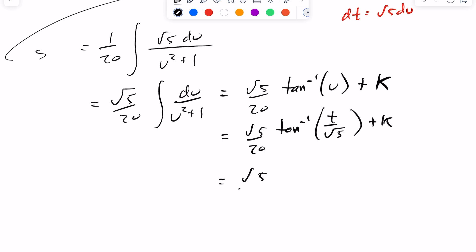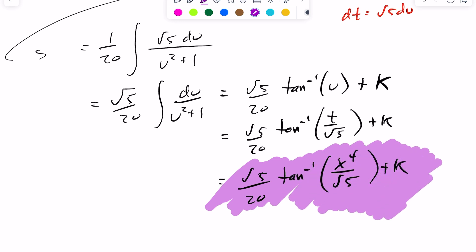And if you recall, we also had done two substitutions. So in this case here, t was equal to x to the power of 4. So we end up getting our indefinite integral answer as root 5 over 20, tan inverse of x to the power of 4 over root of 5 plus some constant value k.